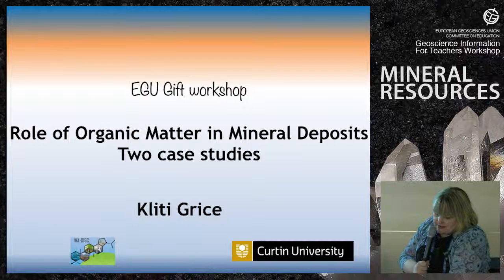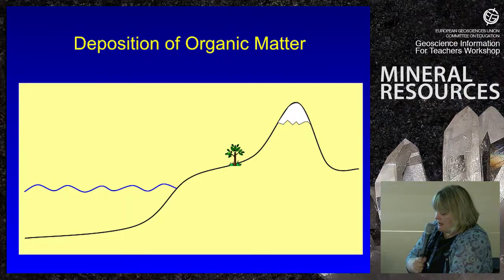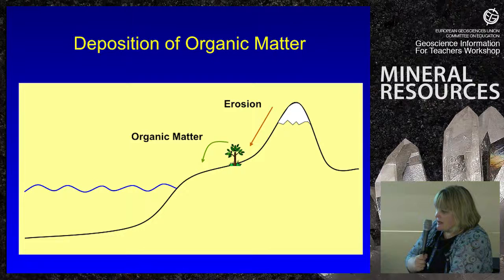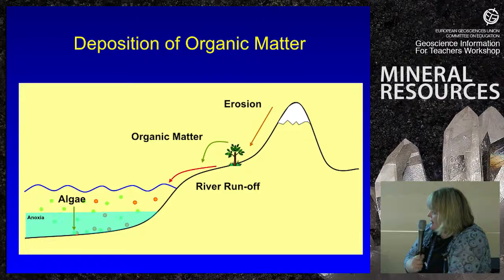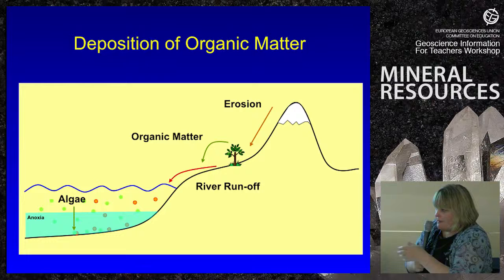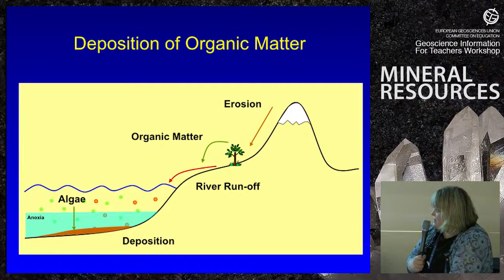I have a history of working on mass extinctions, so some of that work is very relevant to the deposition of various mineral deposits. I'm going to present two case studies, starting with an introduction about the deposition of organic matter deriving through erosion from land material. This can get deposited by river runoff into a marine realm, and those nutrients lead to algal blooms.